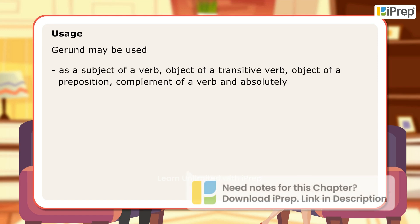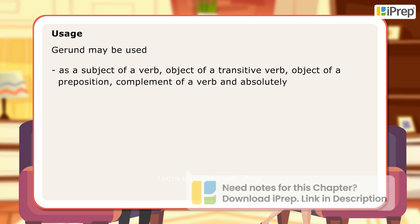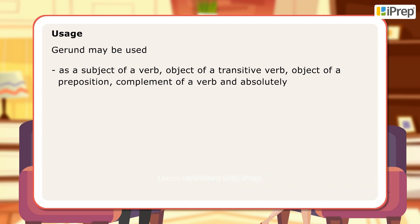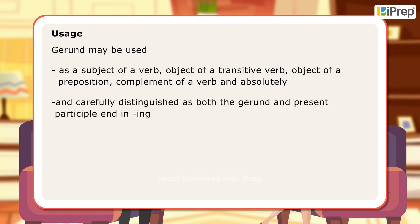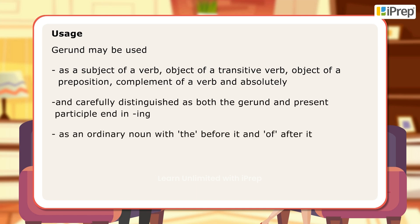Usage: Gerund may be used as a subject of a verb, object of a transitive verb, object of a preposition, complement of a verb, and used absolutely. Note that both the gerund and present participle end in ing, like an ordinary noun with 'the' before it and 'of' after it.